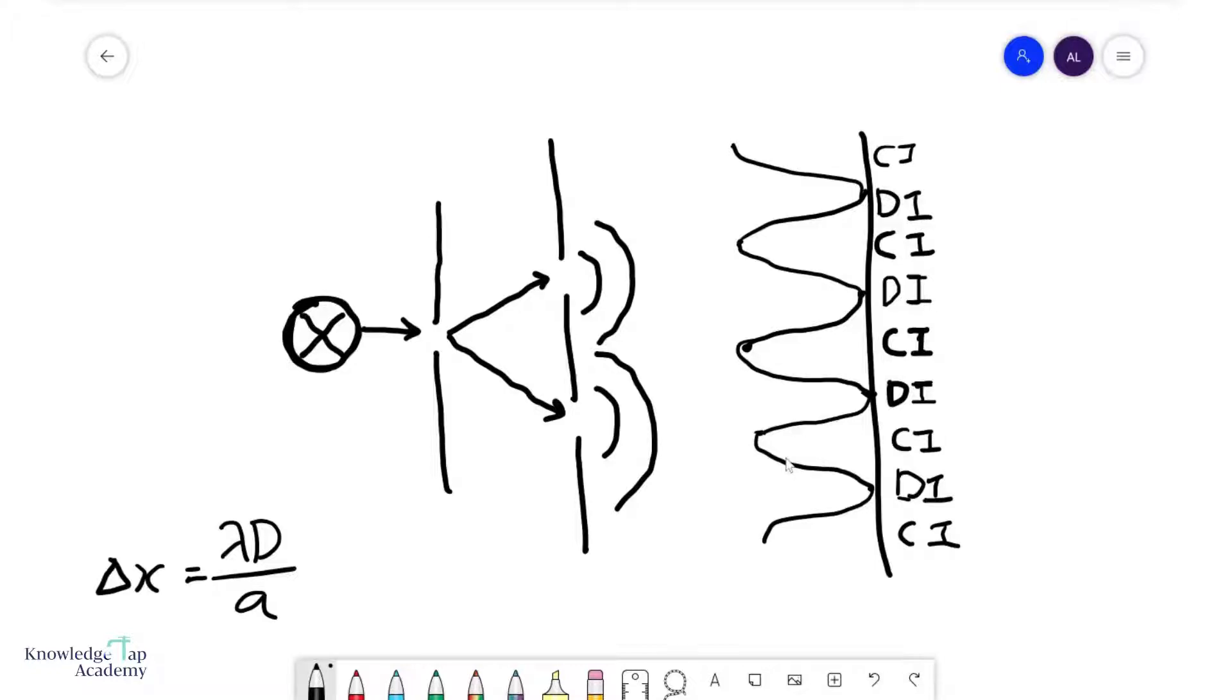We're going to talk about two source interference, and this is a very interesting pattern. Usually what you do first is you need two coherent sources,